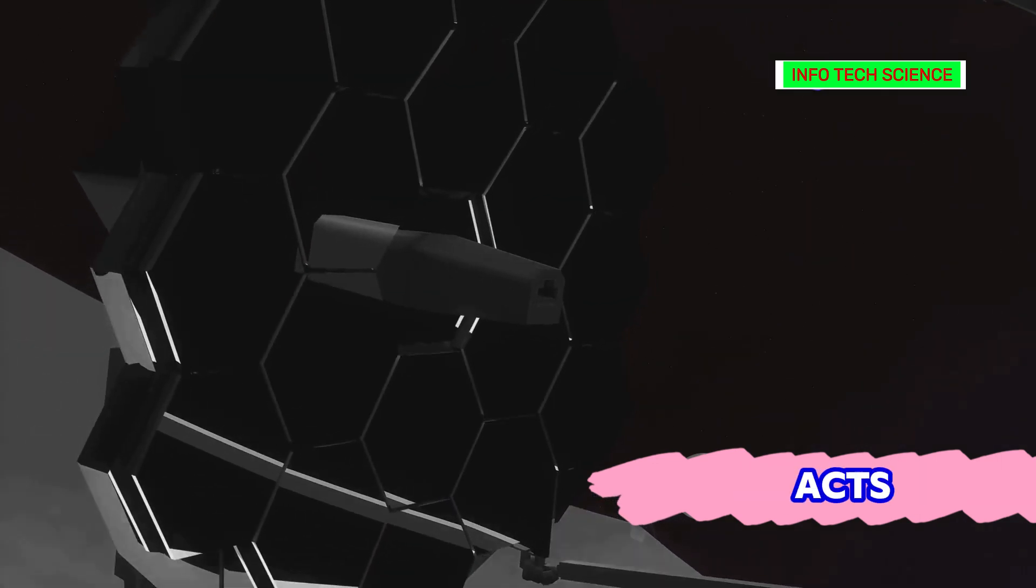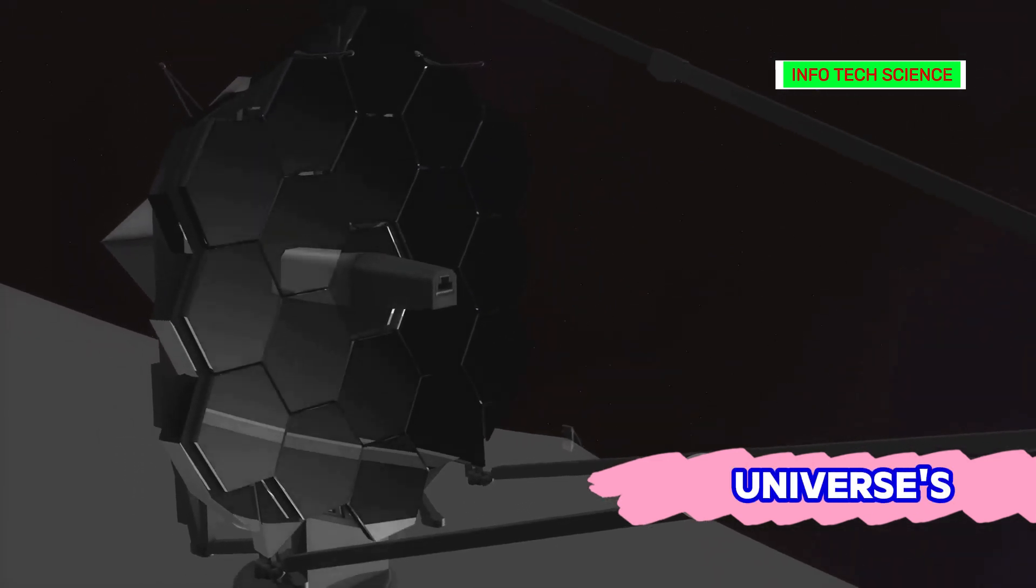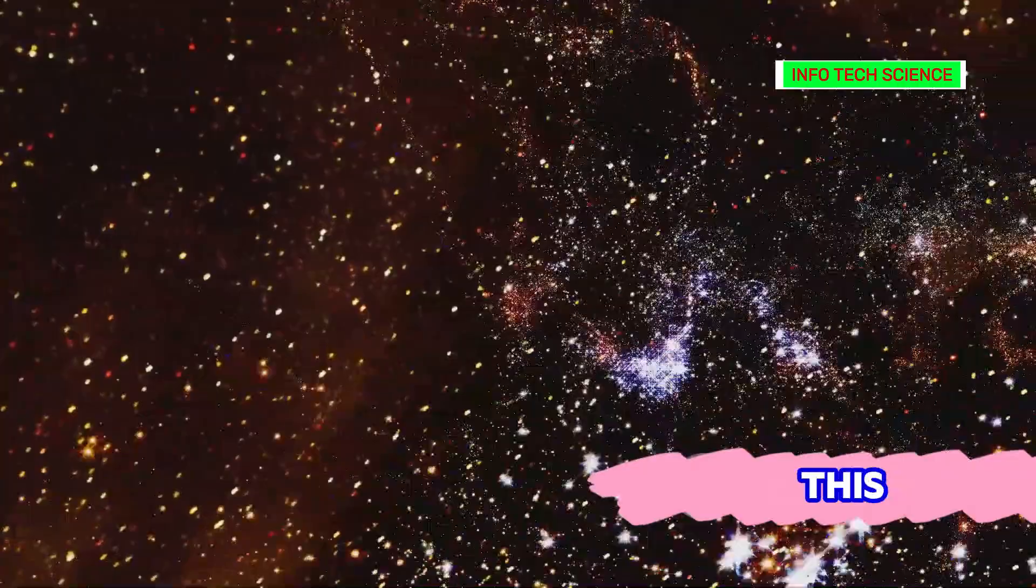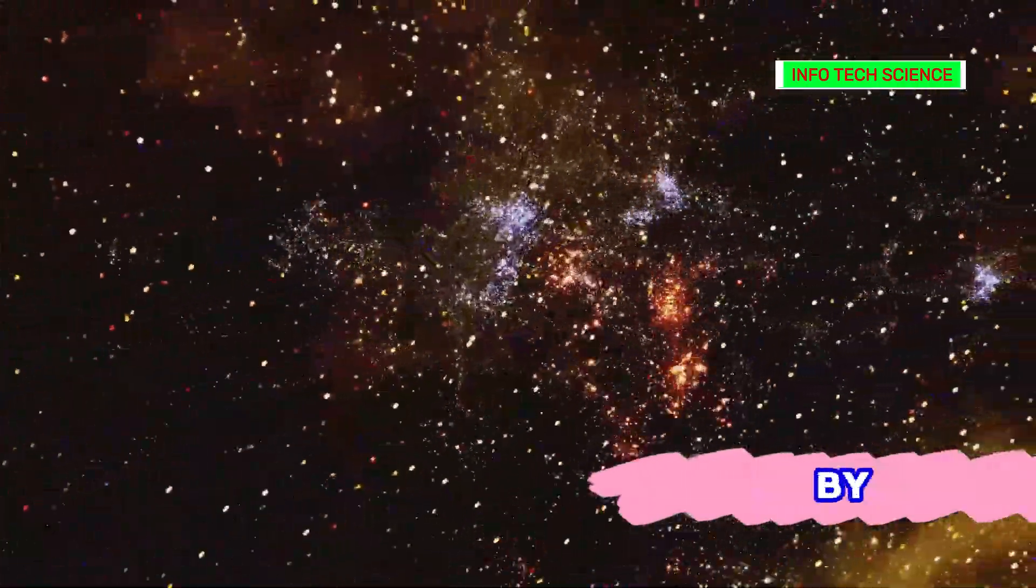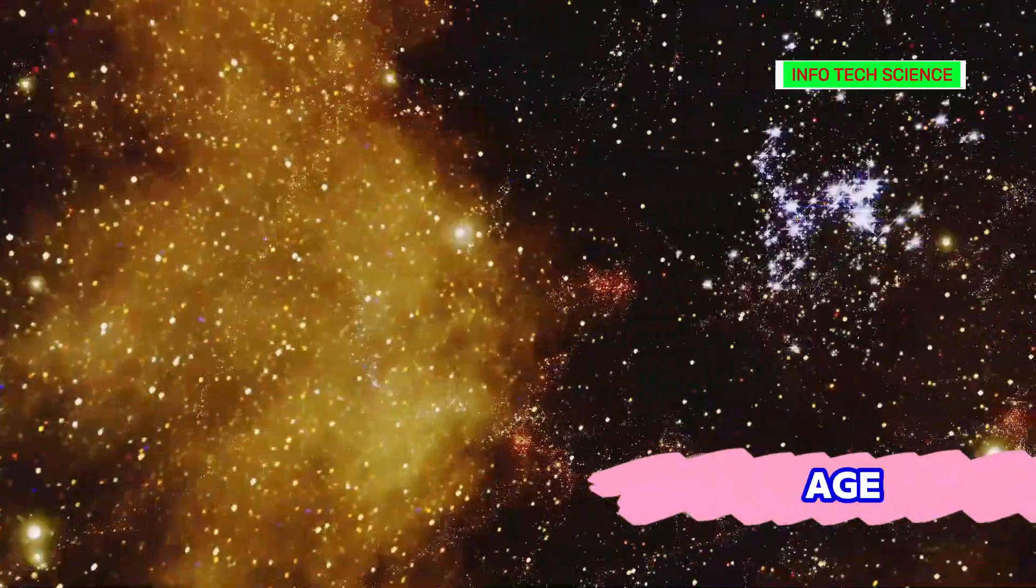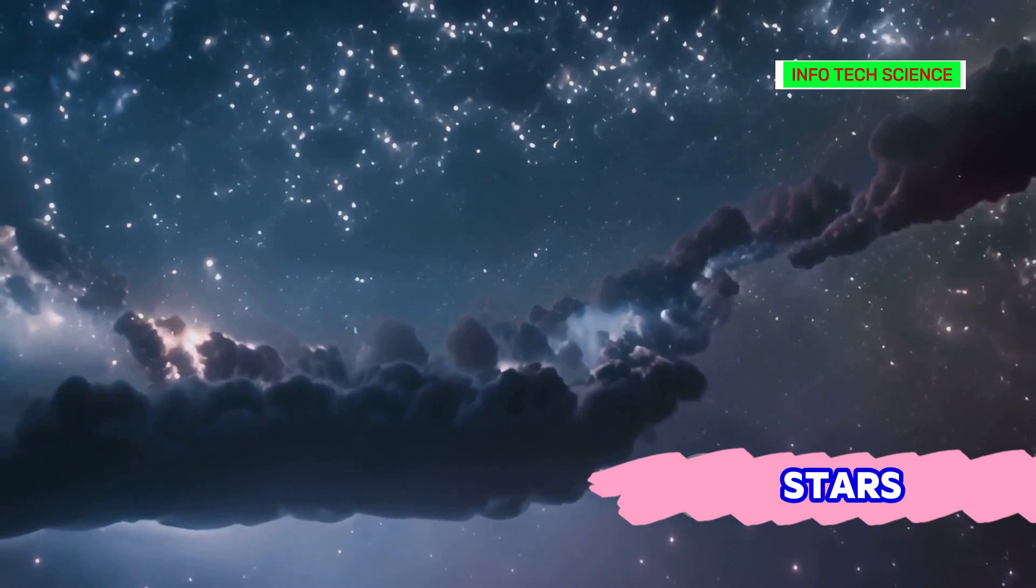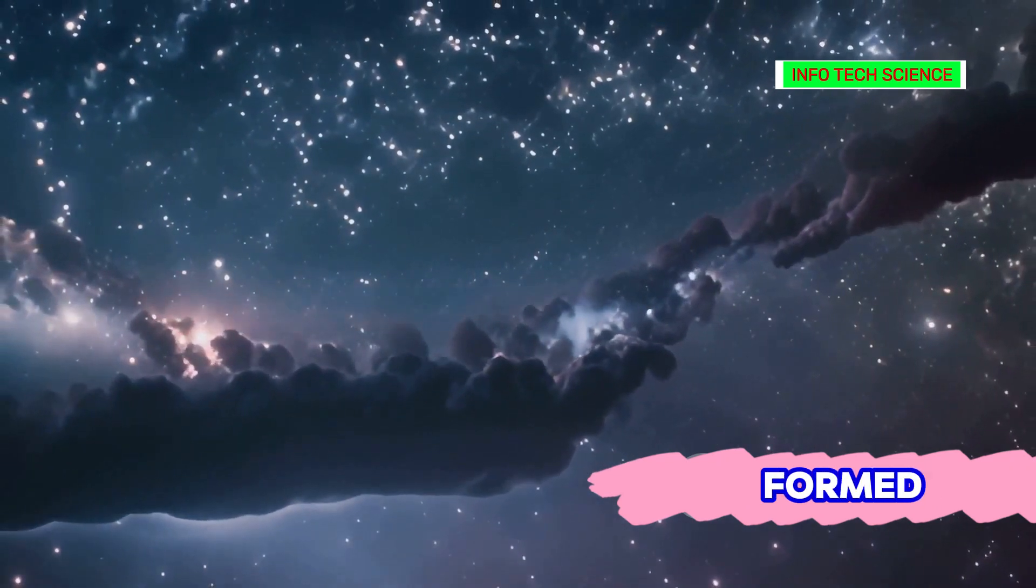The James Webb Space Telescope acts as a time machine, peering billions of years into the past to witness the universe's infancy. Imagine this: we are looking at light emitted by stars that existed when the universe was a mere fraction of its current age. This ability to observe the early universe is crucial for understanding how the first stars, galaxies and galaxy clusters formed.